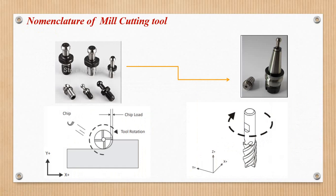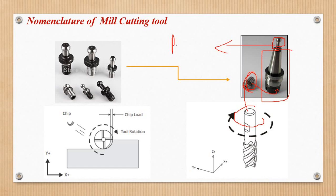The milling cutting tool has a long shank. This is the tool adapter. The cap is called a collet, which is inside the spindle. The pin is called a pull stud. The pull stud is locked in the middle of the spindle. This is the milling cutting tool.